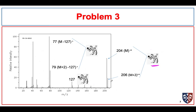We see two peaks: one is due to the molecular ion and one is due to the M+2 molecular ion. There's roughly a 3 to 1 ratio here, which is very indicative of chlorine.